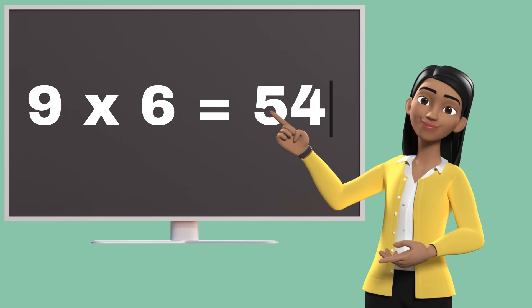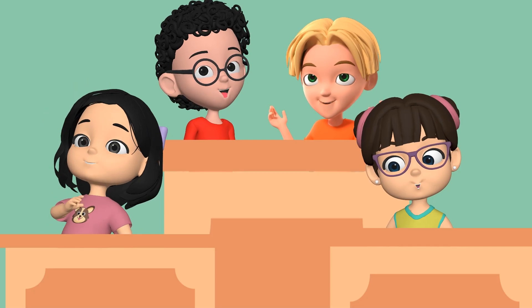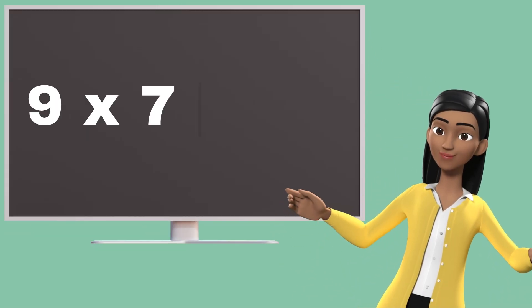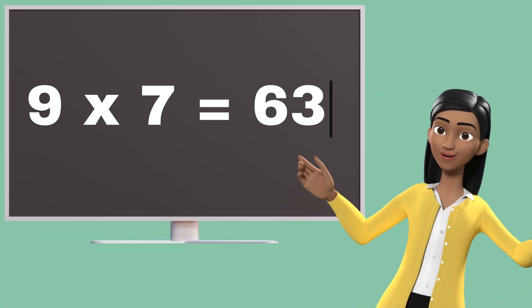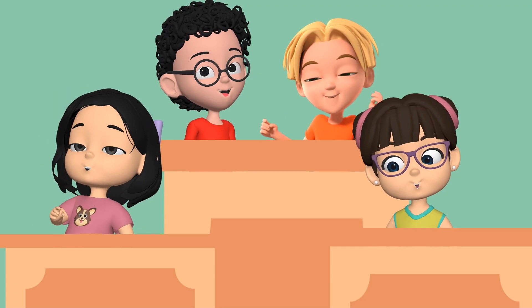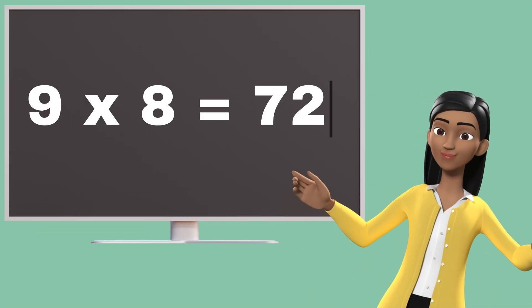Nine sixes are fifty-four. Nine sixes are fifty-four. Nine sevens are sixty-three. Nine sevens are sixty-three. Nine eights are seventy-two.